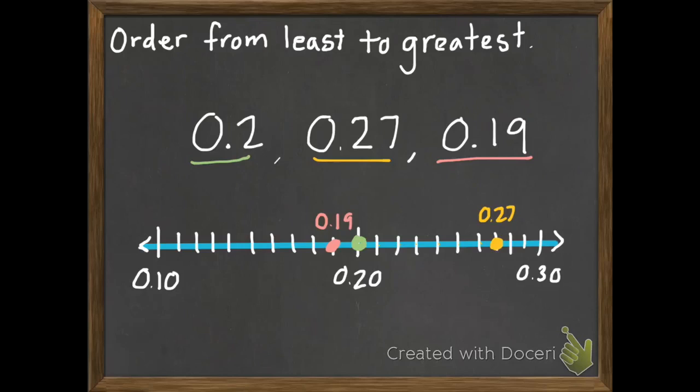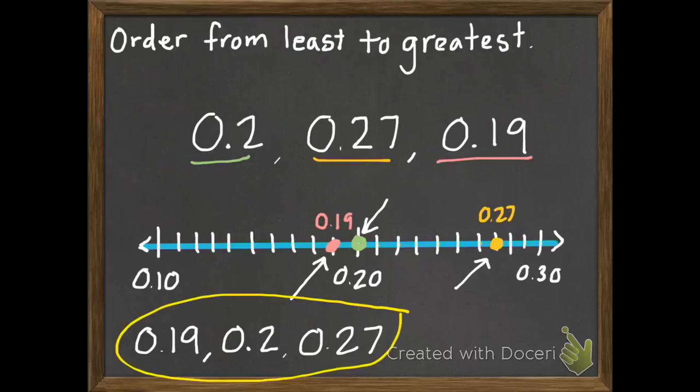And now I know that the least is going to be the furthest one to the left, which is this one, the 19 hundredths. So I'm going to write that first down at the bottom. Then my next one over is the 20 hundredths, which we can just write as 2 tenths. And then my furthest one over to the right is 27 hundredths. So there we go. That is our answer from least to greatest.